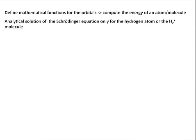We have the analytical solution to the Schrödinger equation only for the hydrogen atom and the H2 plus molecule. Possibly the hydrogen orbitals could be used also for other atoms, but what about molecules?